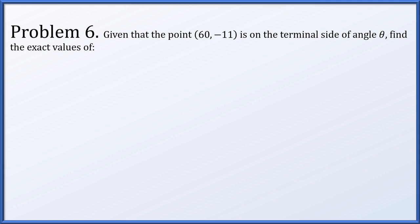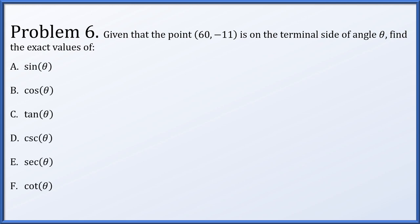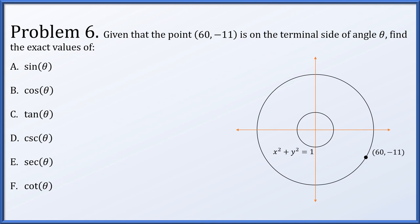In problem 6, we're given that the point (60, −11) is on the terminal side of angle theta, and we're going to find exact values for all six standard trigonometric functions. Here's our unit circle x² + y² = 1. The point (60, −11) is way outside the unit circle in quadrant 4. It lies on a larger circle x² + y² = r², and the angle theta points to that point.